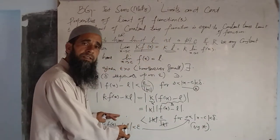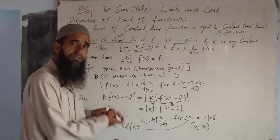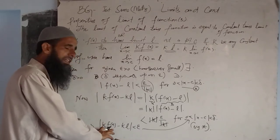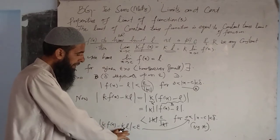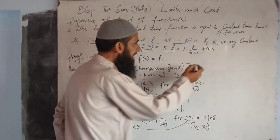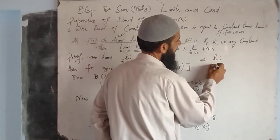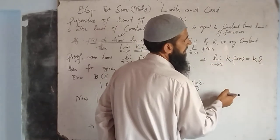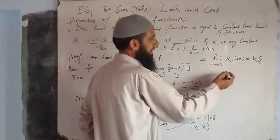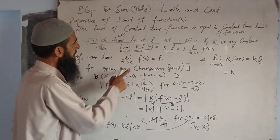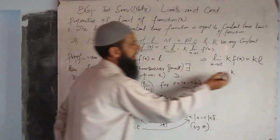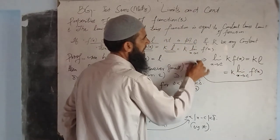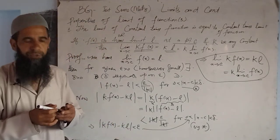Clearly, this is the definition of the limit of a function at a point. The function here is k times f(x), and its limit is k times l. This implies that the limit as x tends to c of k times f(x) is equal to k times l, which equals k times the limit as x tends to c of f(x). In this way, the proof of this property is complete.